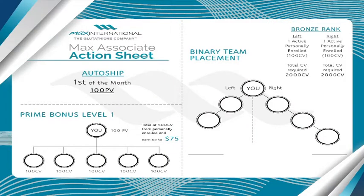As your business grows: two people at 500 each is 1,000, three is 1,500. The goal is to get to Bronze, which is 2,000 on each side. So how do I place these? Every time somebody comes in, alternate — one on the left, then one on the right, back and forth. Sometimes if there's a family connection, like Bill and his brother, you put them on the same side. Just check in with me as it evolves and we'll help you with positioning.